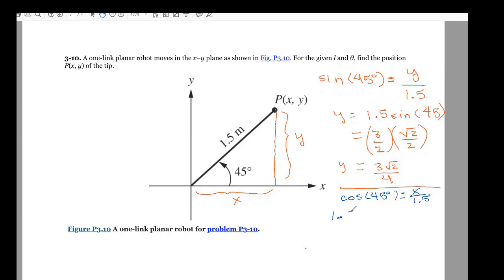1.5 times the square root of 2 over 2, because that's what the cosine of 45 is, is equal to X. And it's exactly the same numbers, so X is going to be exactly the same, 3 times the square root of 2 over 4.